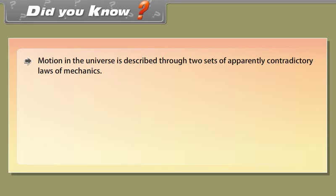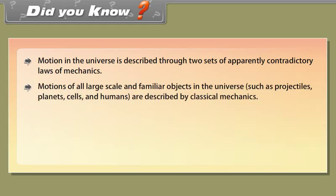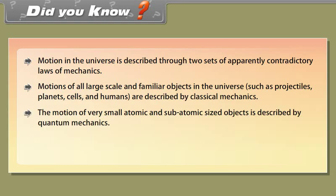Did you know: Motion in the universe is described through two sets of apparently contradictory laws of mechanics. The motions of all large-scale and familiar objects — such as projectiles, planets, cells, and humans — are described by classical mechanics. The motion of very small atomic and sub-atomic sized objects is described by quantum mechanics.